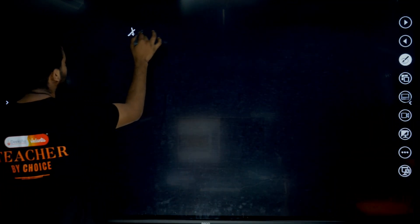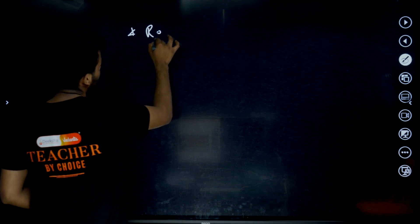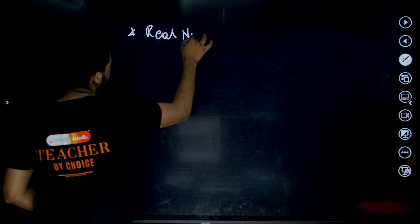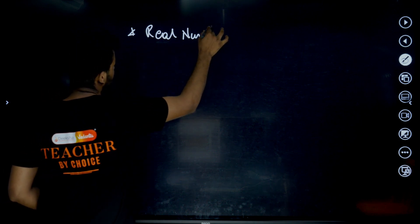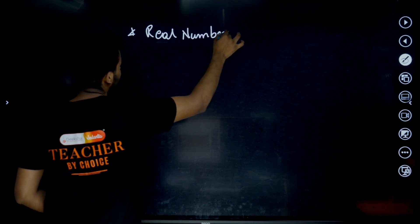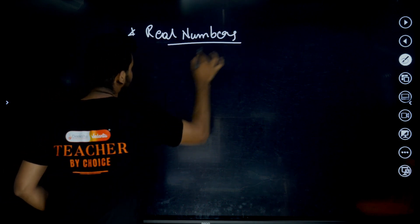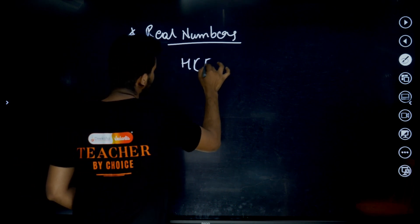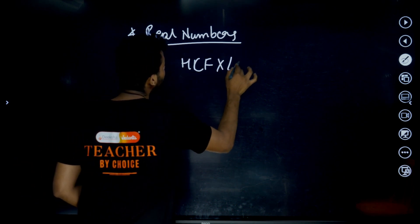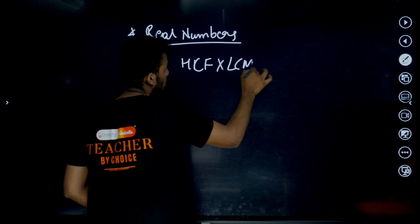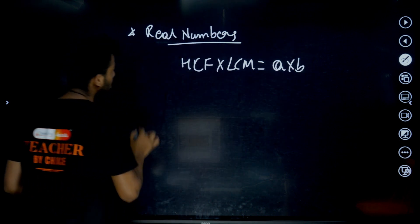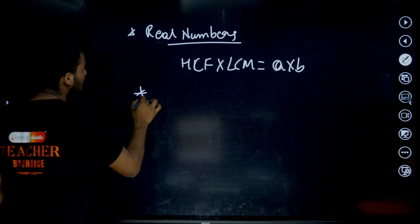Let's start with real numbers. For HCF and LCM, the important formula is: HCF into LCM is equal to A into B. That is the one important formula here.